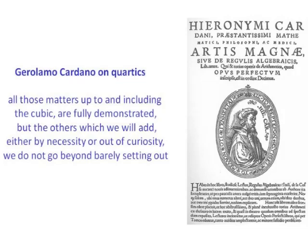Tartaglia was outraged by Cardano's behaviour and spent the rest of his life writing angry letters. After a struggle lasting many centuries, cubic and quartic equations had at last been solved. In the Ars Magna, Cardano presented geometric justifications for solving the various cases of the cubic — essentially completing the cube — but he did not geometrically justify Ferrari's algorithm for the quartic, remarking that matters up to and including the cubic are 'fully demonstrated' but not beyond. Here, I suggest, we find algebra breaking out of the geometric cage in which it had previously been locked.